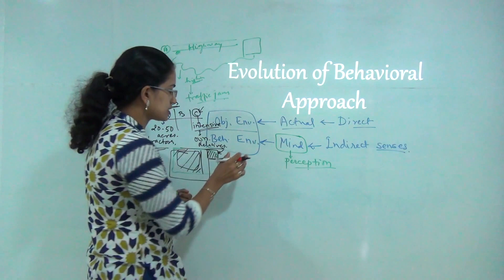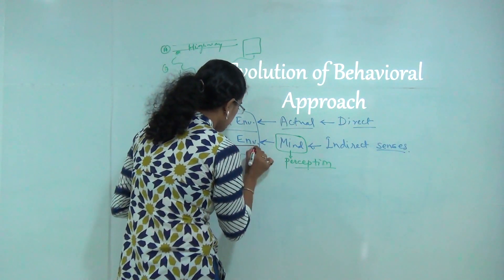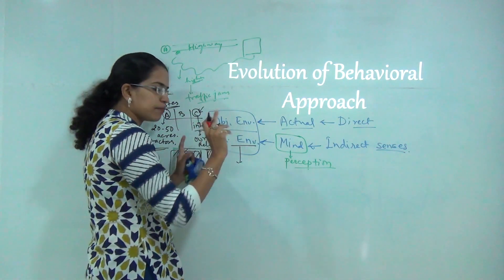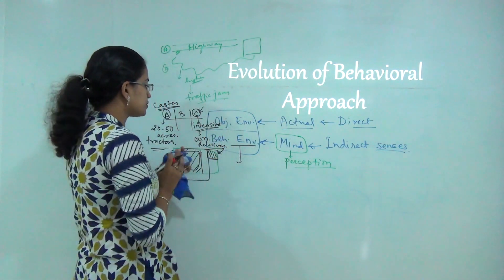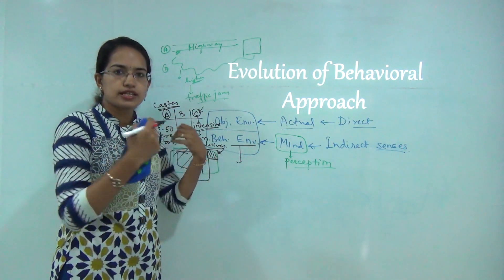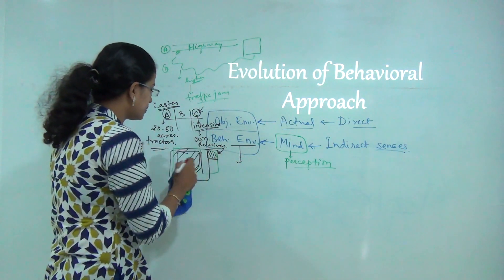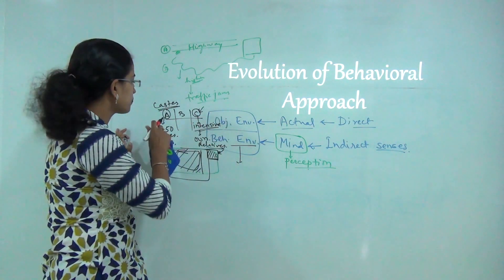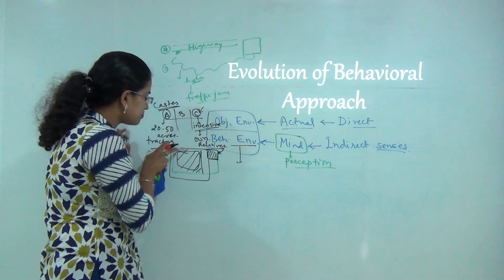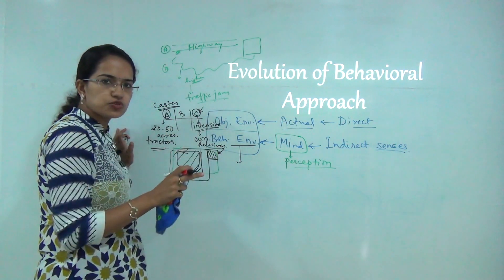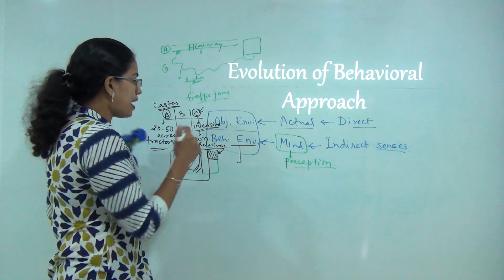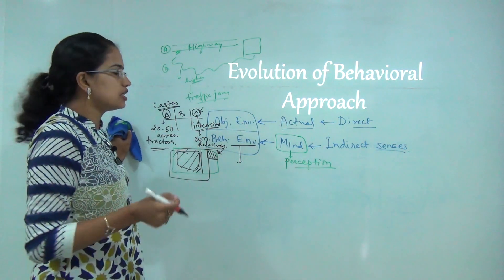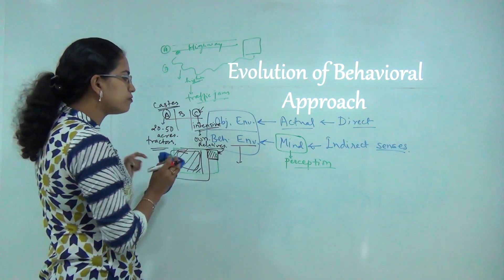That is how we understand the behavioral environment. This behavioral environment is covered nowhere except under the ambit of behavioral approach, because under quantitative revolution or any other approach, we directly count out areas. But what an individual perceives or feels is only included under the ambit of behavioral approach.